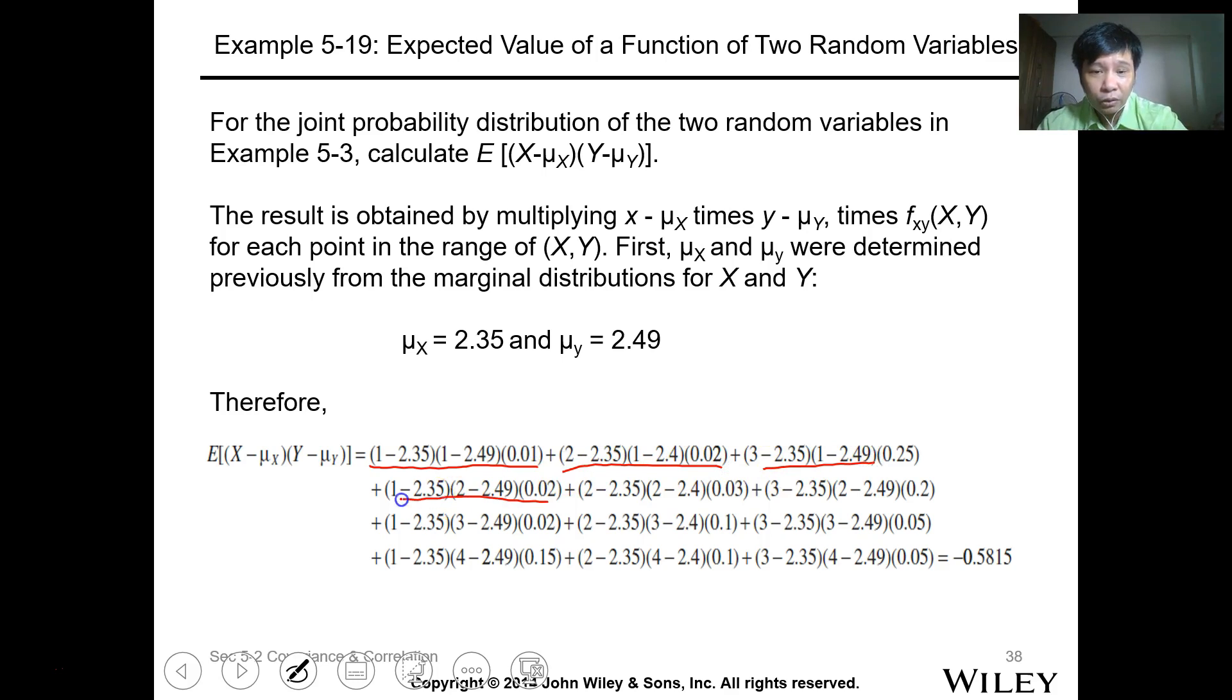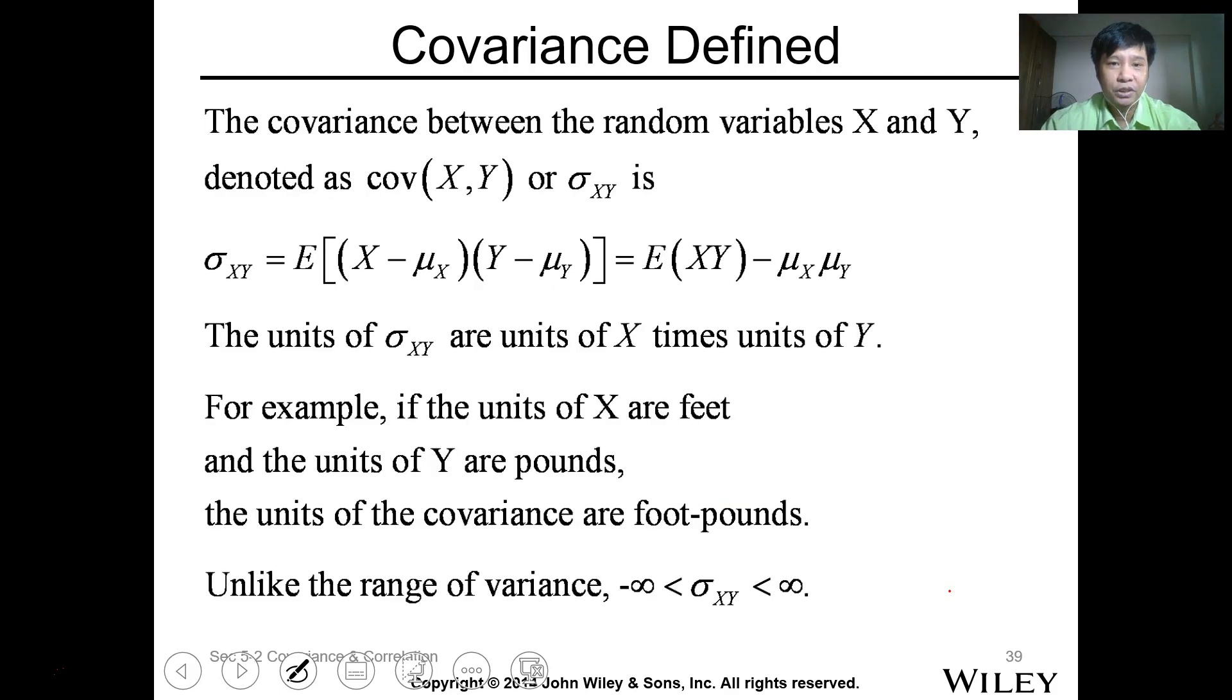Multiply it by the probability of x,y, which is the probability data here. We have 12 data points. Therefore, you get all 1 through 12 data points and get the sum, the summation. So the expected value for our h(x,y), which is x minus mu x times y minus mu y, is negative 0.581.